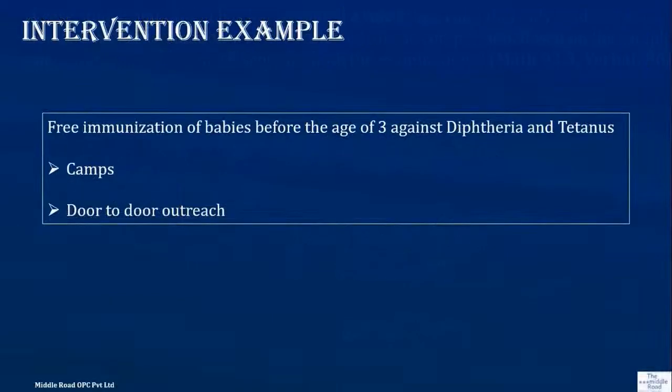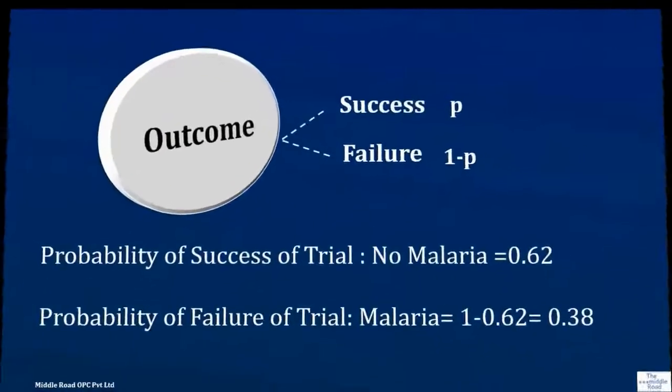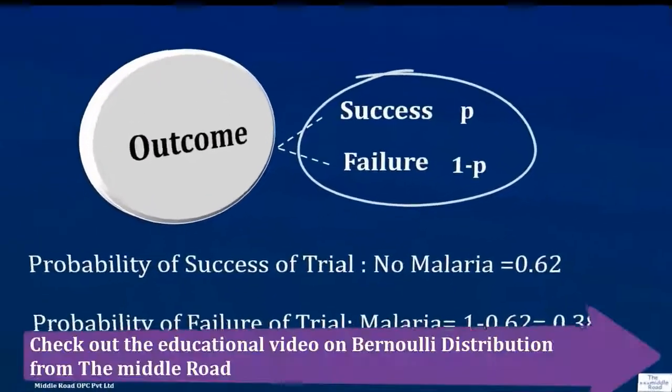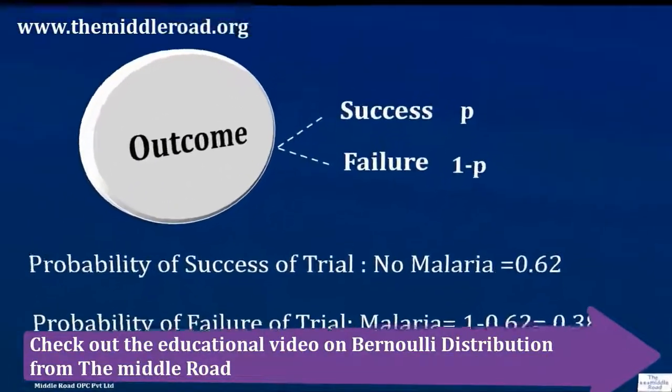In this problem, we know there are only two outcomes, which is what we talked about with Bernoulli distribution. So this is part of a Bernoulli distribution. There are two outcomes: success and failure.